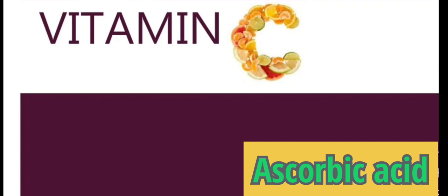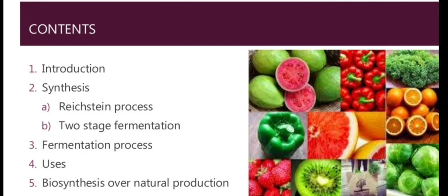Hello everyone, thank you for clicking on this video. This video is all about detailed information of vitamin C. The contents we will cover include its introduction, synthesis at industrial level including two methods — the Reichstein process and two-stage fermentation — the fermentation process in detail including optimum physical conditions, uses of vitamin C at industrial and household level, and biosynthesis over natural production. We will also discuss why we prefer fermentation over extracting vitamin C from citrus fruits.